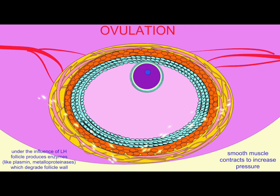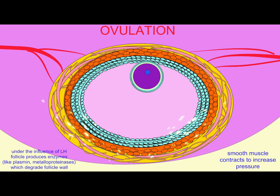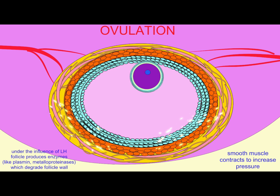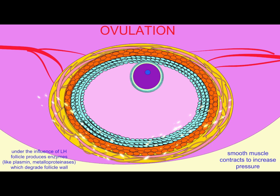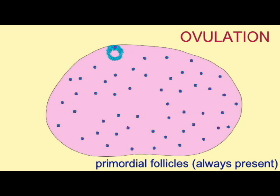LH will also cause the follicle to increase the production of a number of enzymes, such as metalloproteinases and plasmin, which will begin to digest the wall of the follicle — especially digesting the collagen composing the wall. Smooth muscles in the wall of the follicle will contract and create pressure.